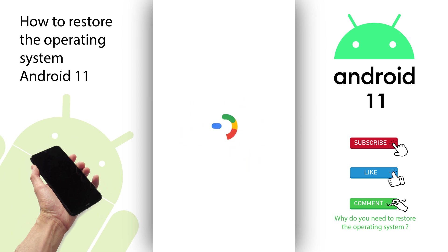The process of reinstallation of the operating system Android 11 has started. All data is now being erased and the operating system is being installed. This process can take between 2 minutes to 10 minutes, depending on the processing speed and memory of your device. Now we just have to wait.